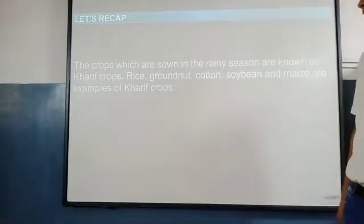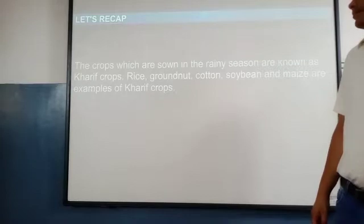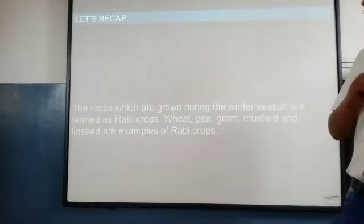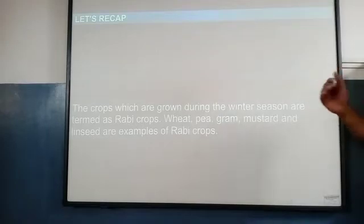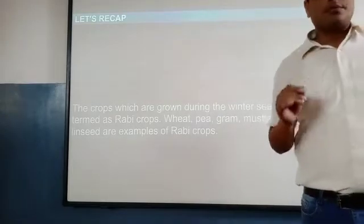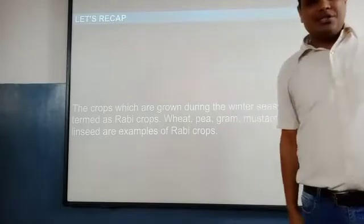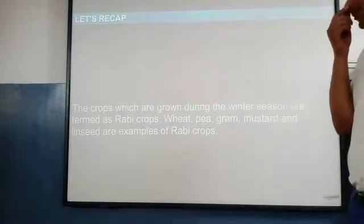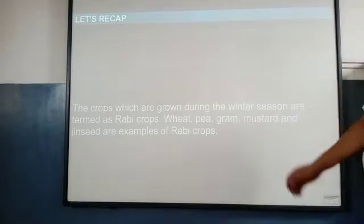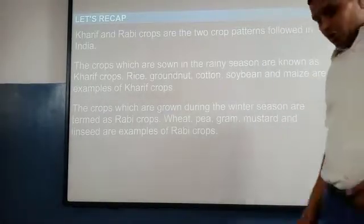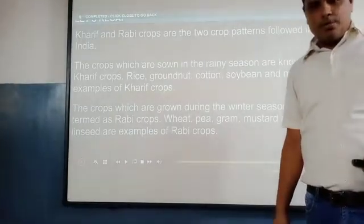The second category: crops grown during the winter season — December and January — are known as Rabi crops. Wheat, pea, gram, mustard, and linseed are examples of Rabi crops.